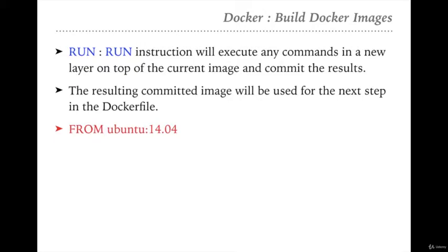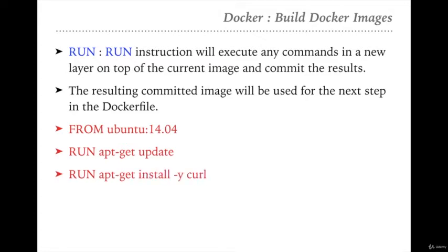For example, suppose we are downloading Ubuntu 14.04 using FROM, then we execute a RUN command 'apt-get update' to update the packages of our Ubuntu base image. Then we can again execute a RUN command to install curl on that Ubuntu 14.04 base image. With RUN, we can execute commands on our image, and the output of the RUN command will be used by subsequent instructions in the Dockerfile.